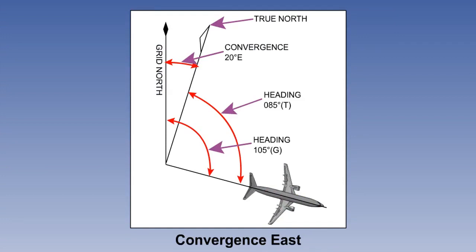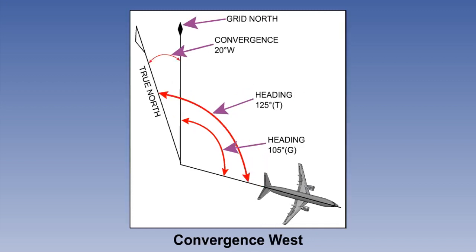This shows convergence east, true least. True north is out to the east of grid north. So convergence is defined as east. The grid heading is 105 degrees. Convergence east, true least. True should be 20 degrees less than grid. So the true heading should be 085, which it is, as we can see. This one shows convergence west, true best. True north is out to the west of grid north. So convergence is defined as west. The grid heading is 105 degrees. Convergence west, true best. True should be 20 degrees more than grid. So the true heading should be 125 true.